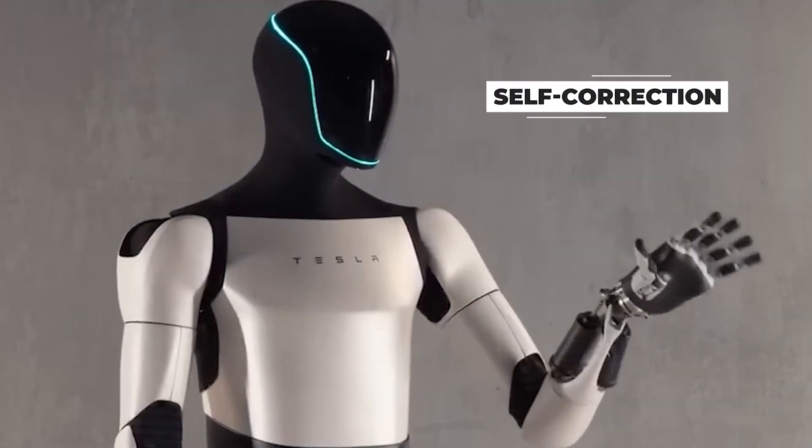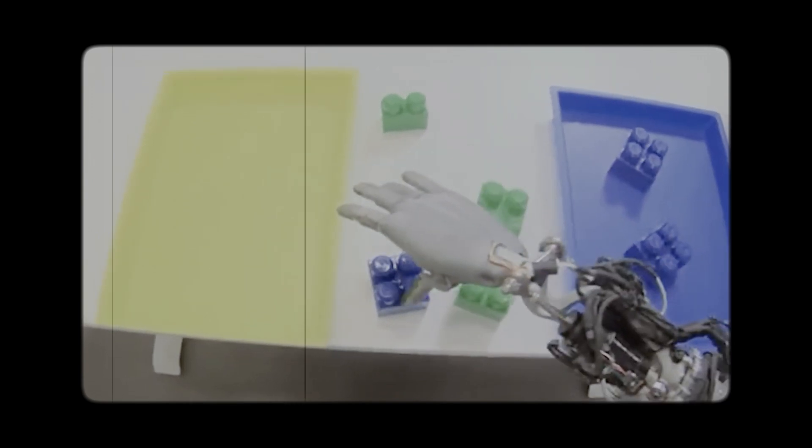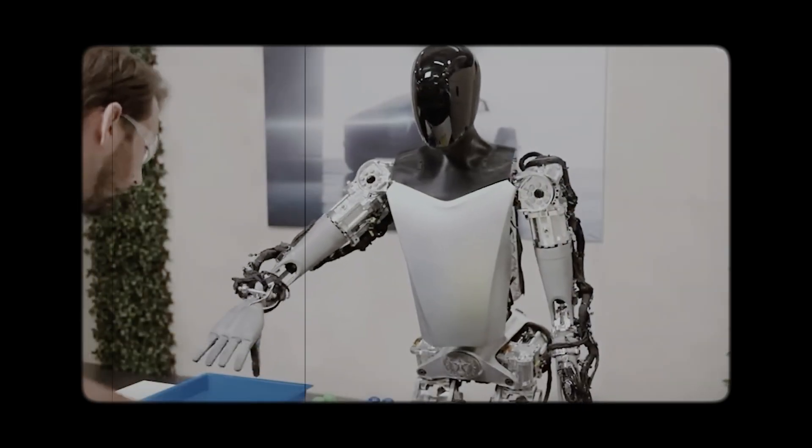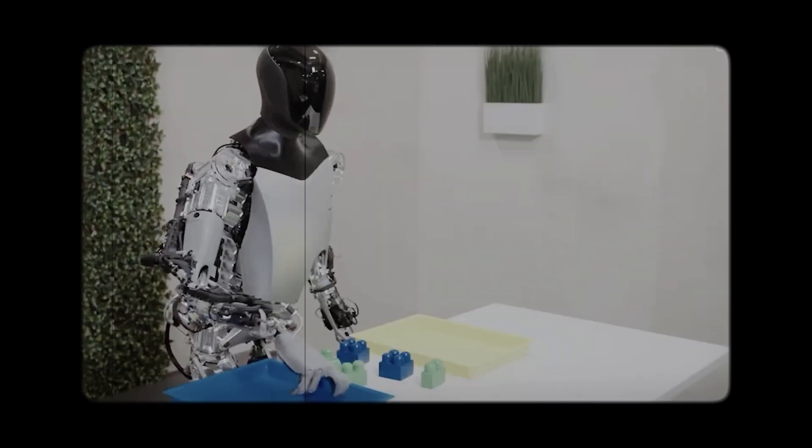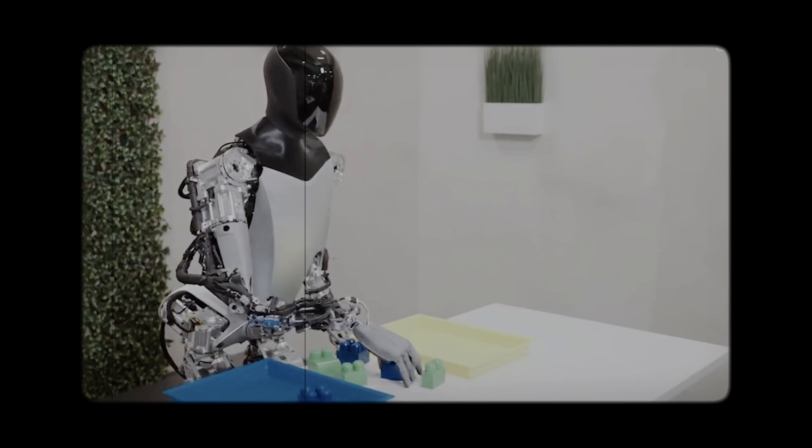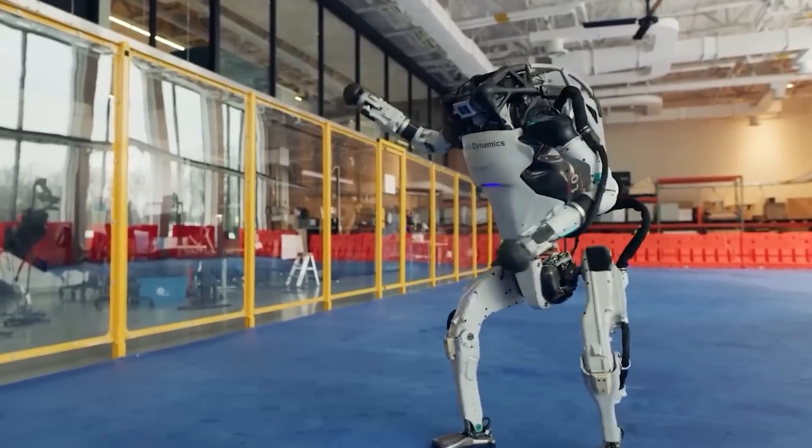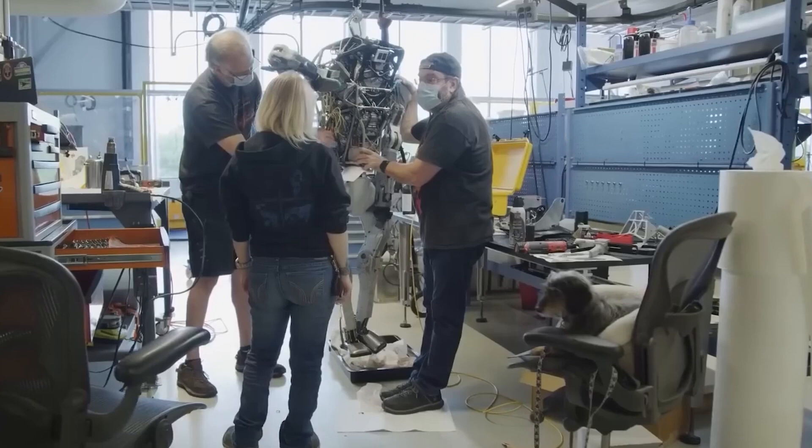The emphasis on self-correction, as demonstrated in scenarios like block sorting, showcases the robot's understanding of consequences and its ability to rectify actions, a feature currently absent in many other robotic platforms.